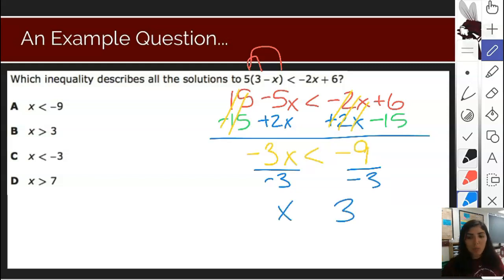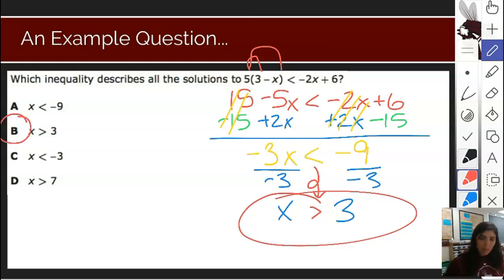But I really hope you remember that we just divided by a negative number. So what do we have to do? Flip the sign. That sign gets flipped over and we no longer have a less than sign. We have a greater than sign. So our solution set would be x greater than 3, which is answer choice B.